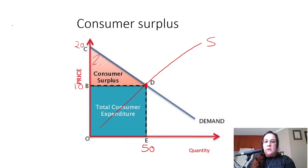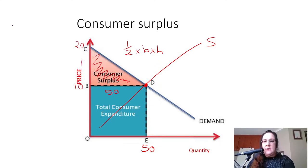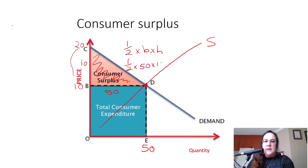In order to work out this triangular area, I use the formula for the area of a triangle: half times base times height. Our base would be 50, and our height would be 10 — because it's the difference between $20 and $10. So it's half times 50 times 10, and that gives me 250.